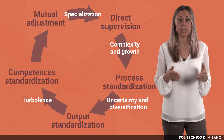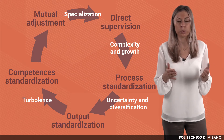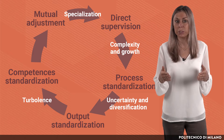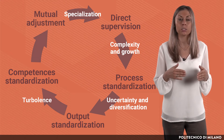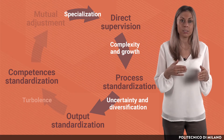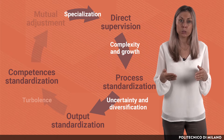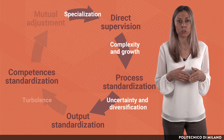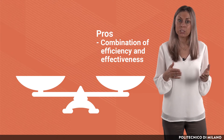In a hybrid structure, both coordination mechanisms typical of divisional and functional structure are used. In the output-oriented business unit, it is more likely that managers are managing activities through output standardization, whereas in input-oriented functions through direct supervision and process standardization.